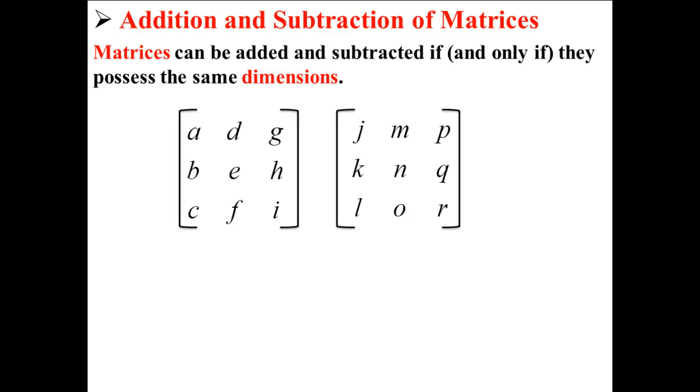For example, here we have two matrices. The matrix on the left is a 3x3 matrix, and the matrix on the right is a 3x3 matrix. Because they have the same dimensions, we can add and subtract them.